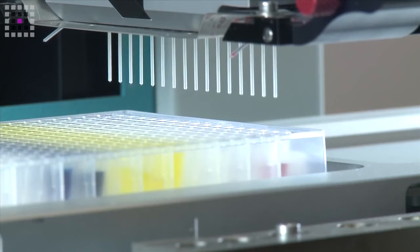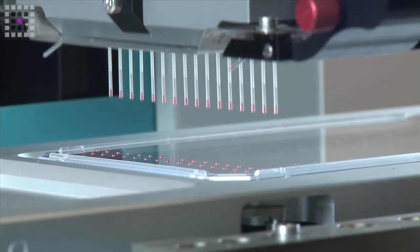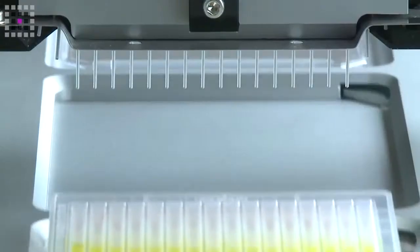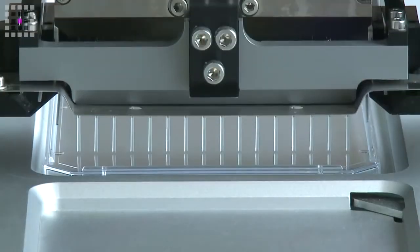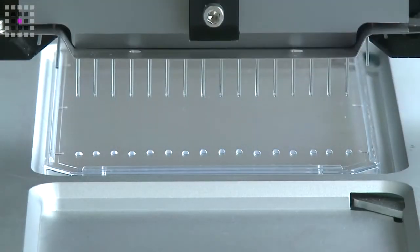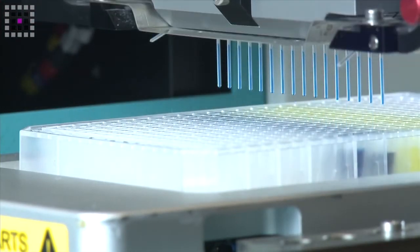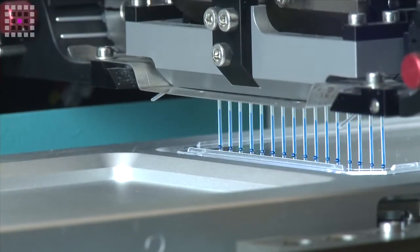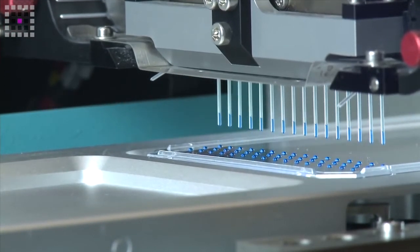The dead volume in a source plate that we're working with is also very low. We can go down to half a microliter of sample in a well and still aspirate from the well. With a V-bottomed 384 or 96 well plate we can go down to dead volumes of less than half a microliter, meaning that the compound or sample can go a very long way.